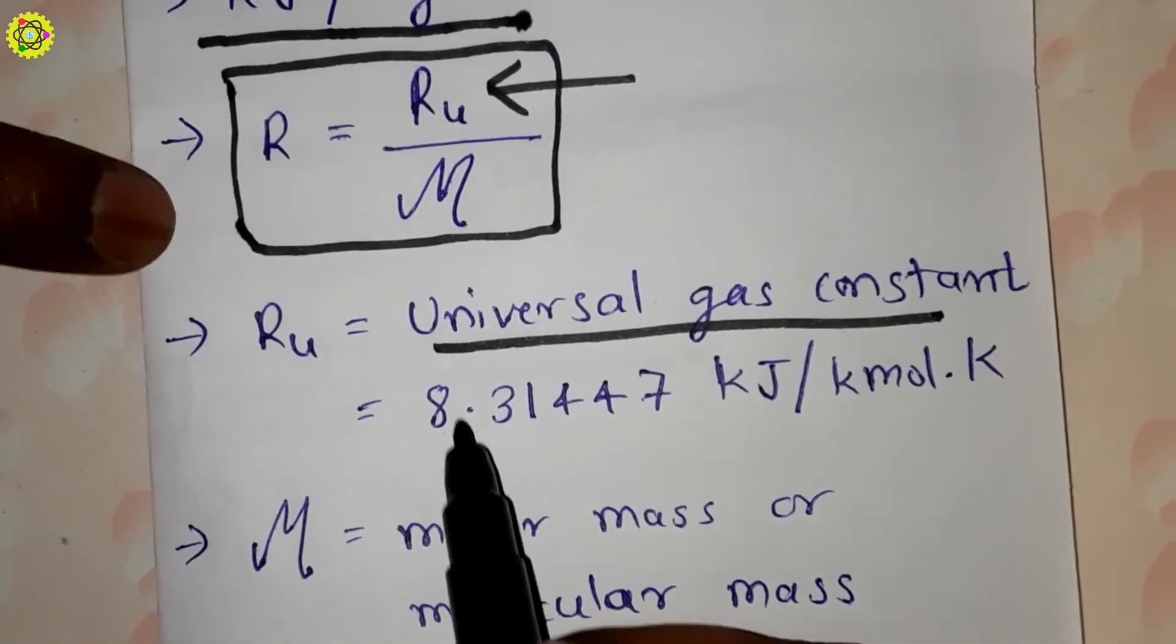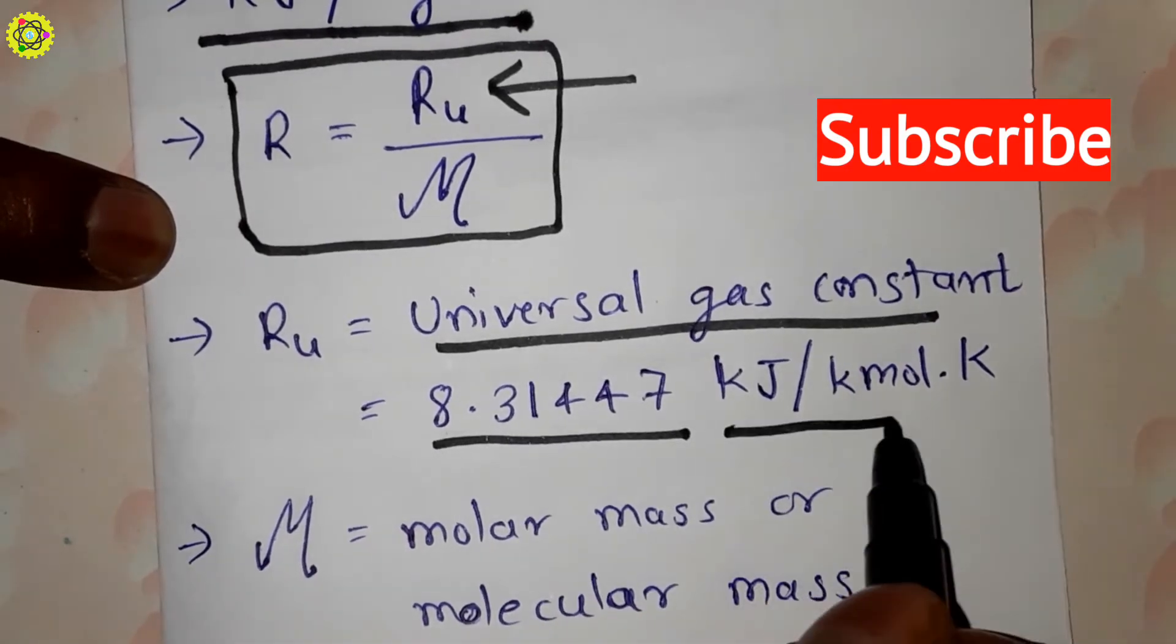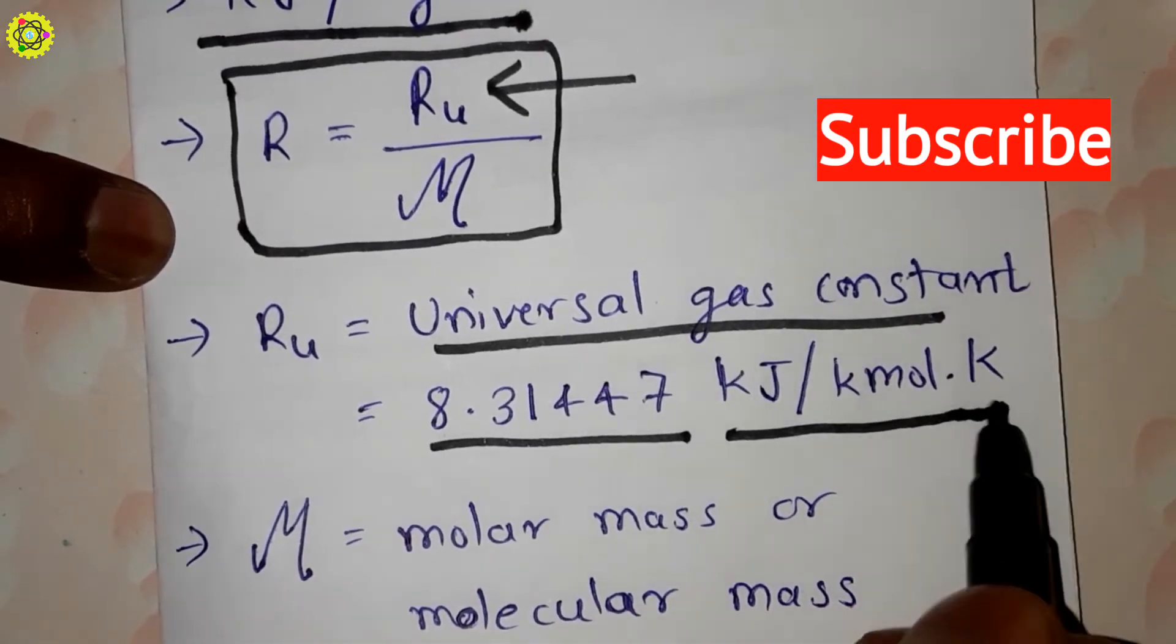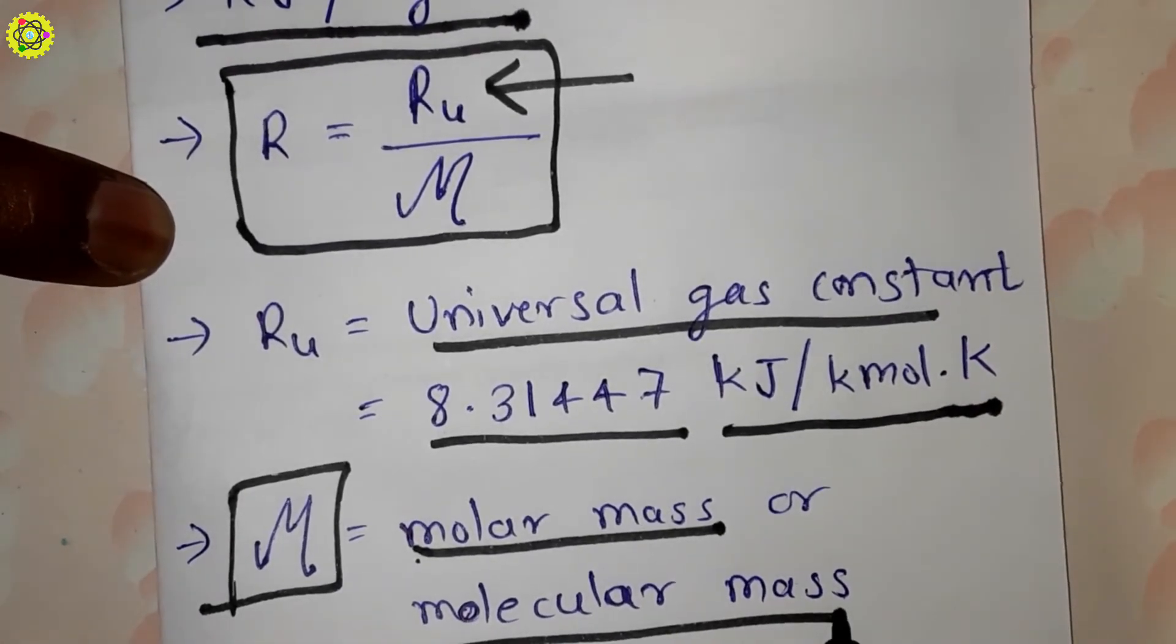and its value is 8.31447 kilojoule per kilomole kelvin (kJ/kmol·K), and M is the molar mass or molecular mass.